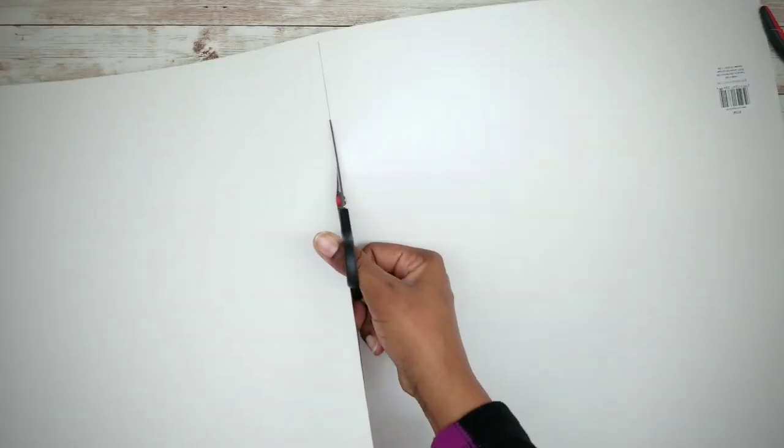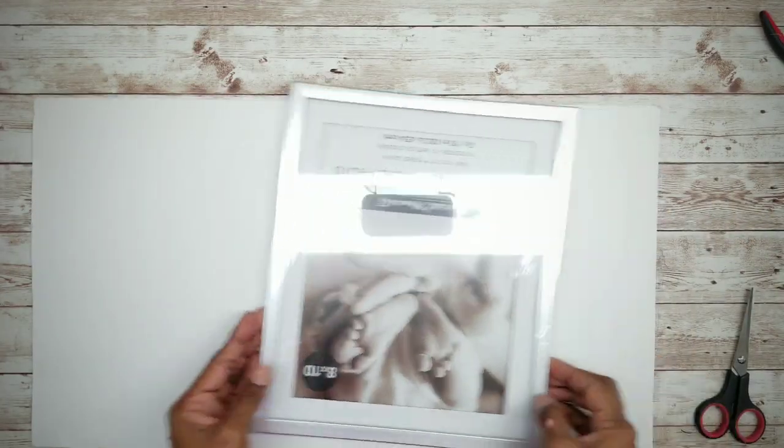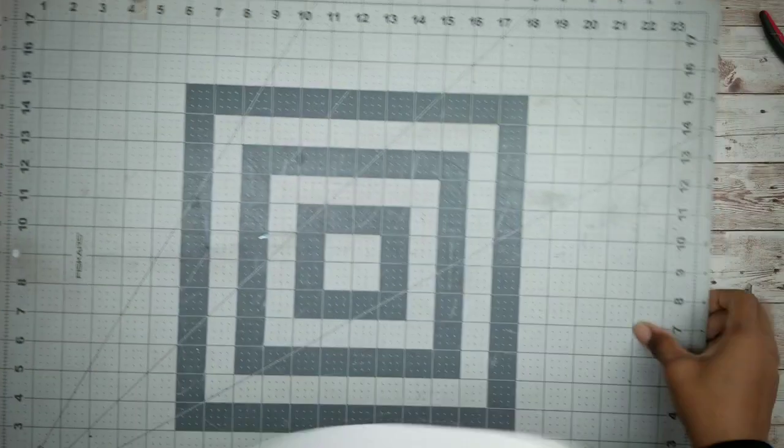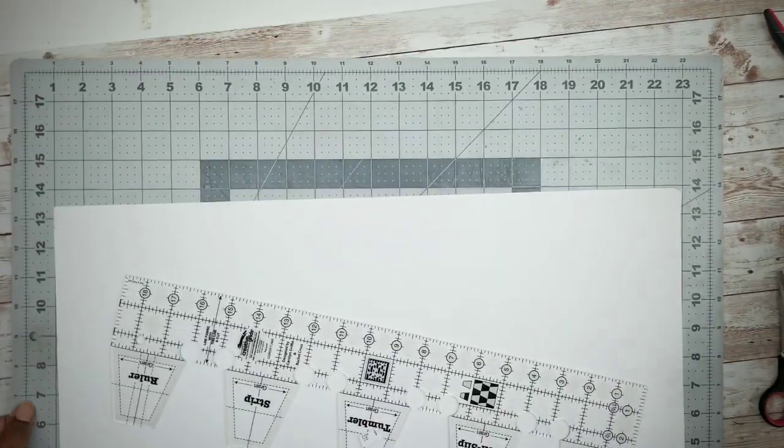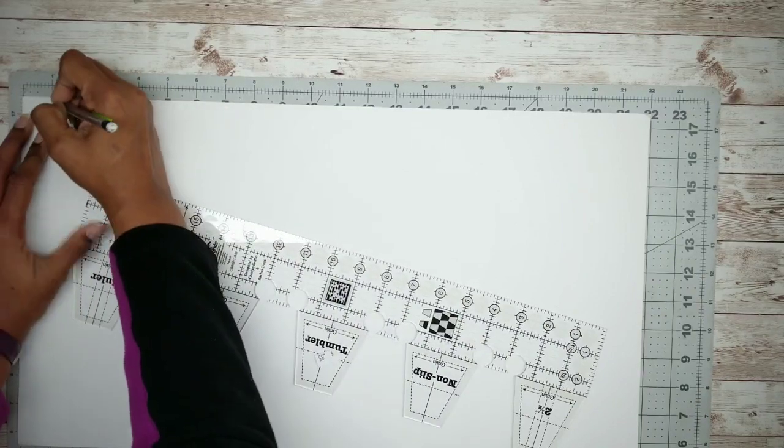And then we want to cut that piece off. So now what we're going to do is we want to add embossing lines to our poster board. So I'm going to lay down the poster board and I am going to make little tick marks every half inch down the top and the bottom of that poster board.